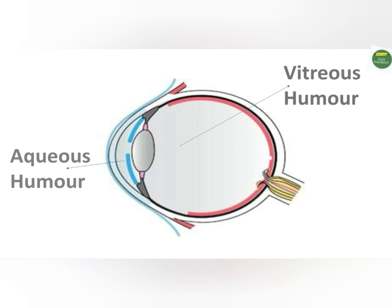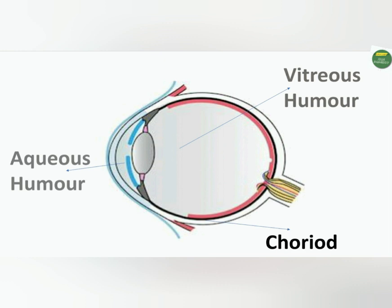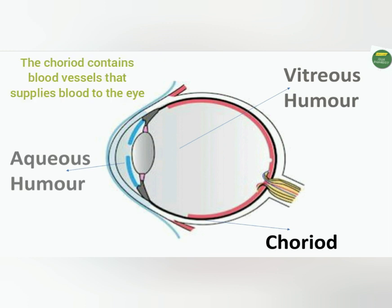The last structure is the choroid, the middle layer of the eye, indicated in black in the diagram. The dark color of the choroid is to reduce total internal reflection in the eye. The choroid also contains blood vessels that supply blood to the eye.